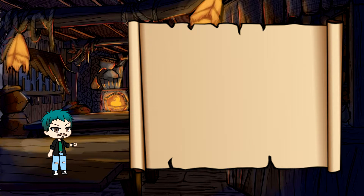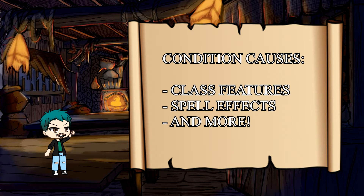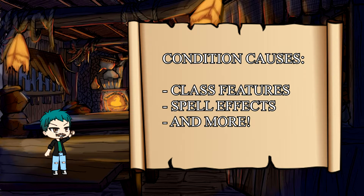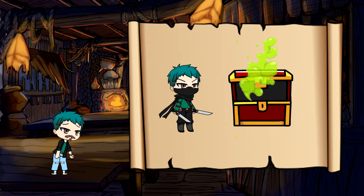Hello, everyone. I'm CroveMurder15. Condition effects can come from a multitude of reasons — from class features, to spell effects, to even something as simple as triggering a trap that your rogue was supposed to spot a minute ago.